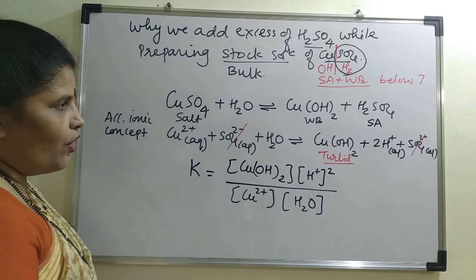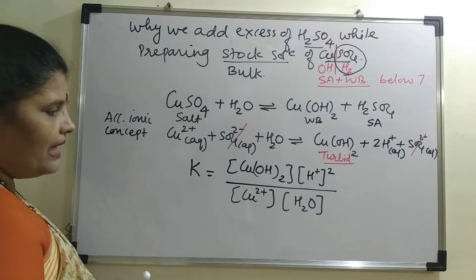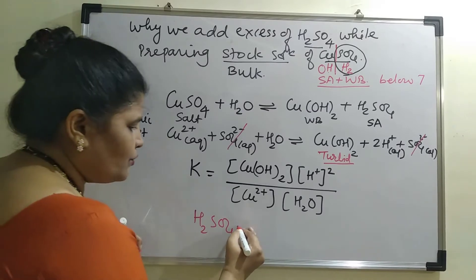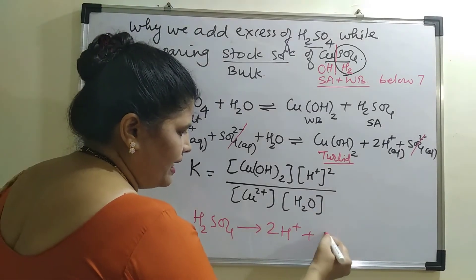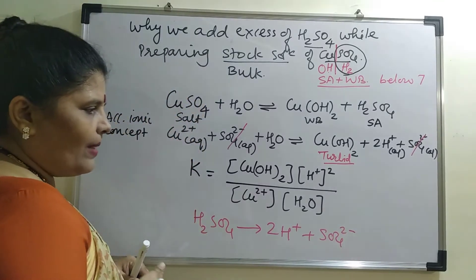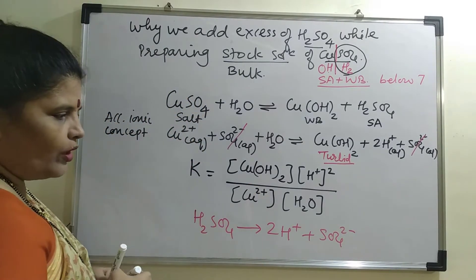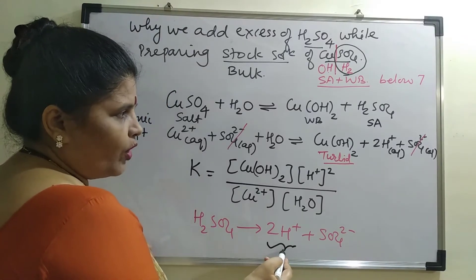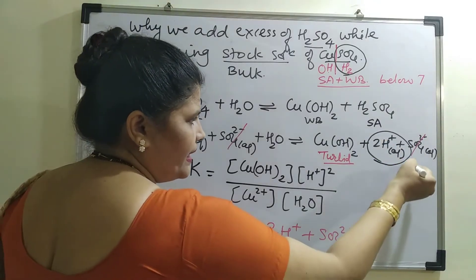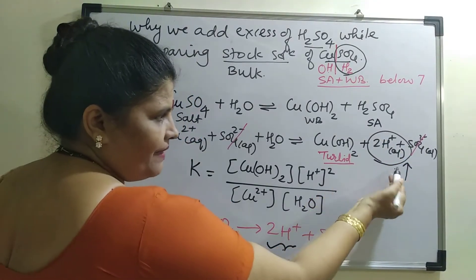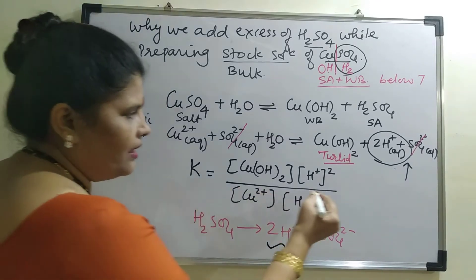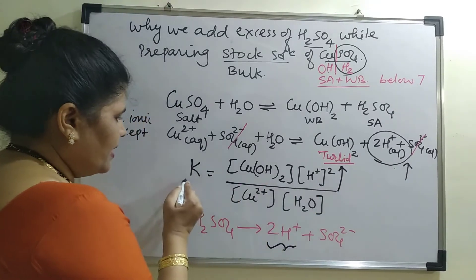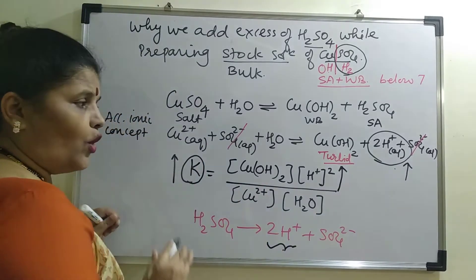Now let us see what happens when we add H₂SO₄. H₂SO₄ is a strong acid and a strong electrolyte, so it gives 2H⁺ and SO₄²⁻ ions. As soon as H₂SO₄ is added, H⁺ ions are released and their concentration increases in the solution. When this H⁺ concentration increases, the numerator of the equilibrium expression also increases.